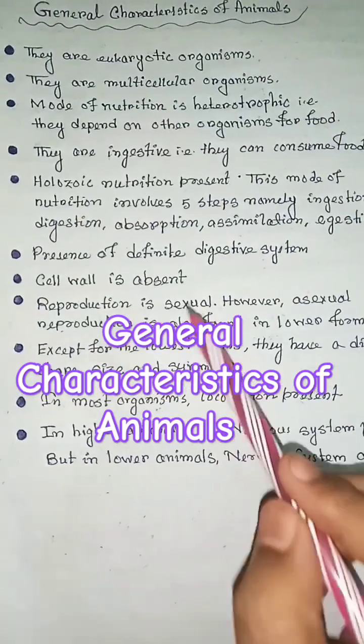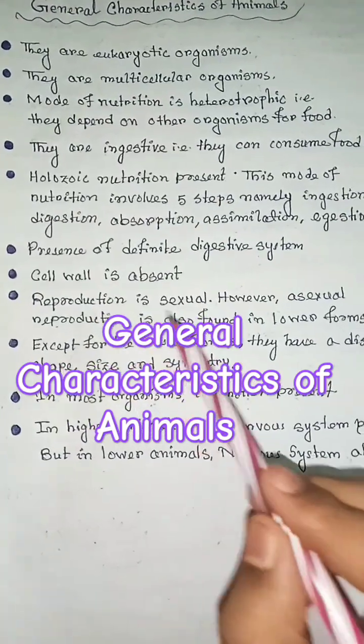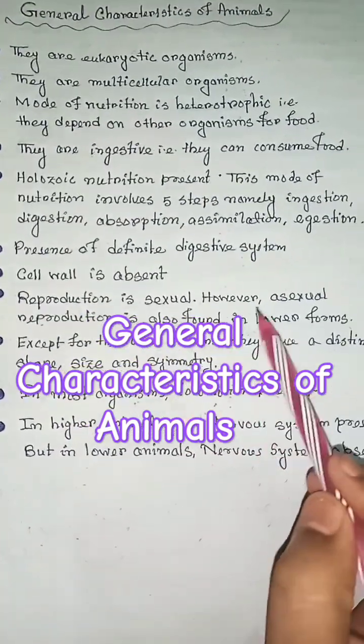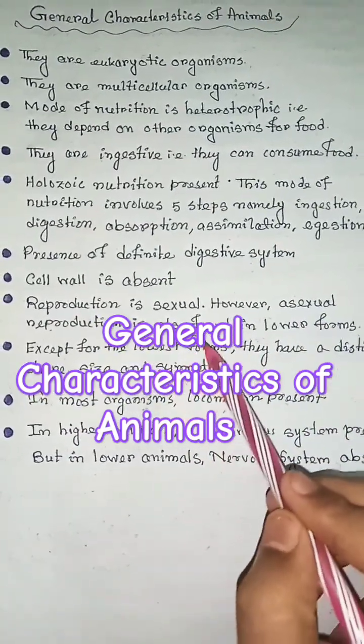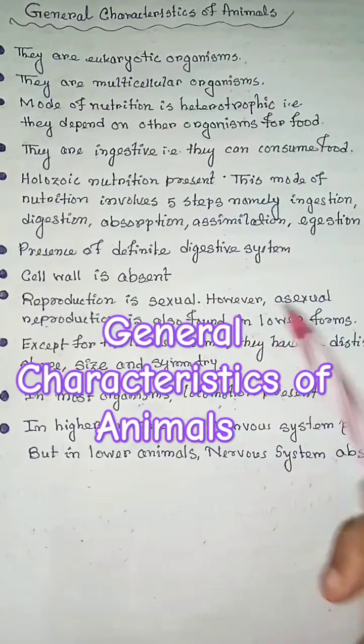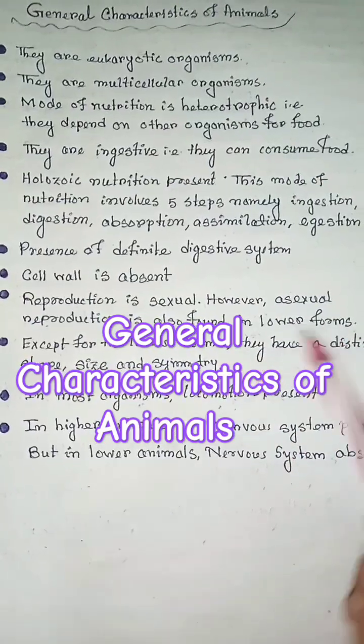Cell wall is absent. Reproduction is sexual; however, asexual reproduction is also found in lower forms.